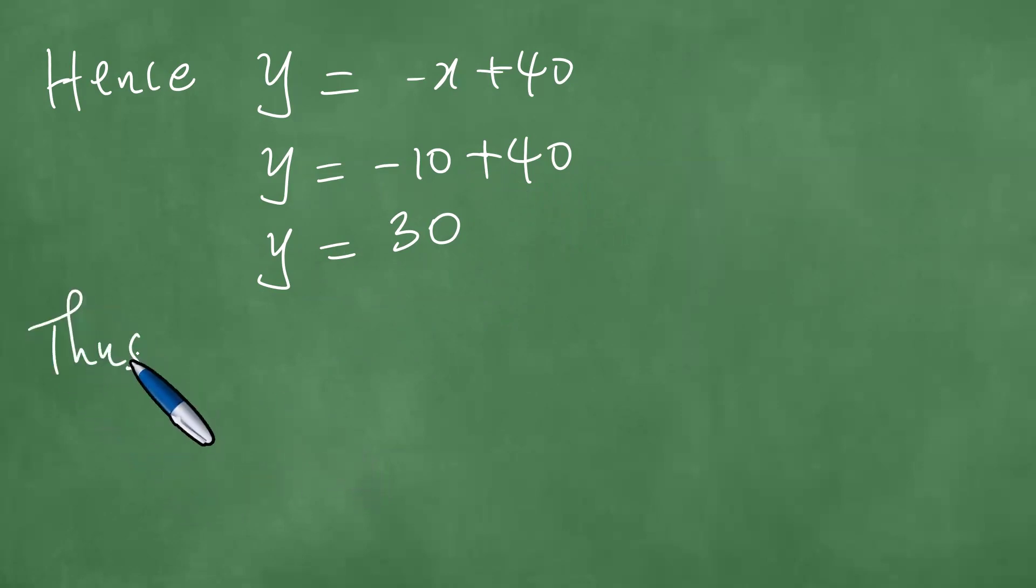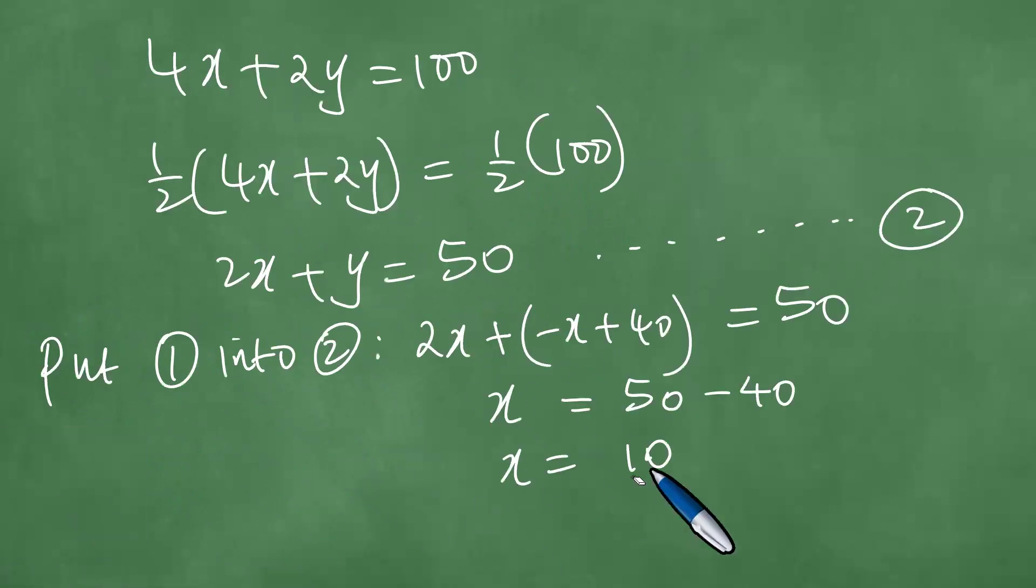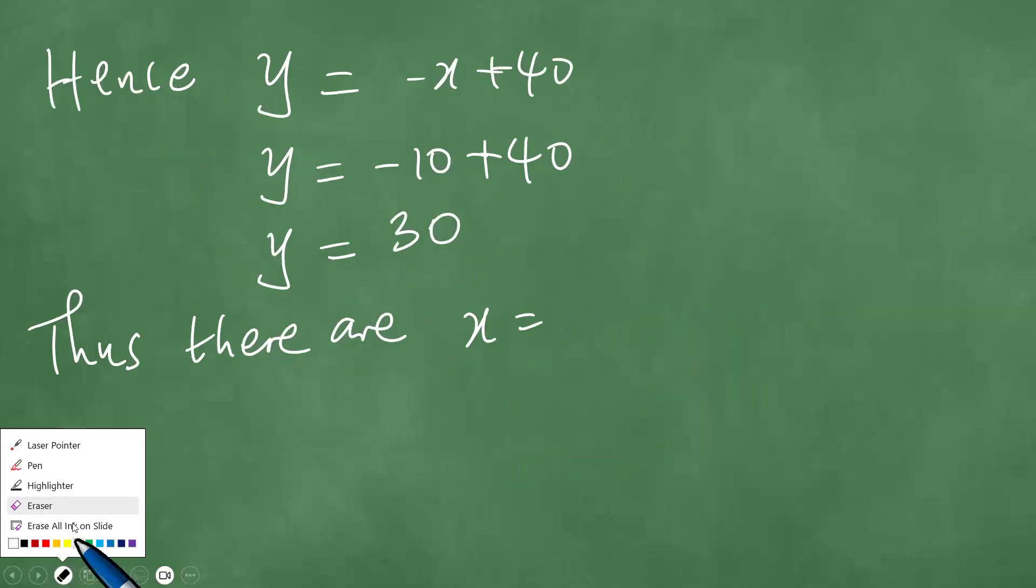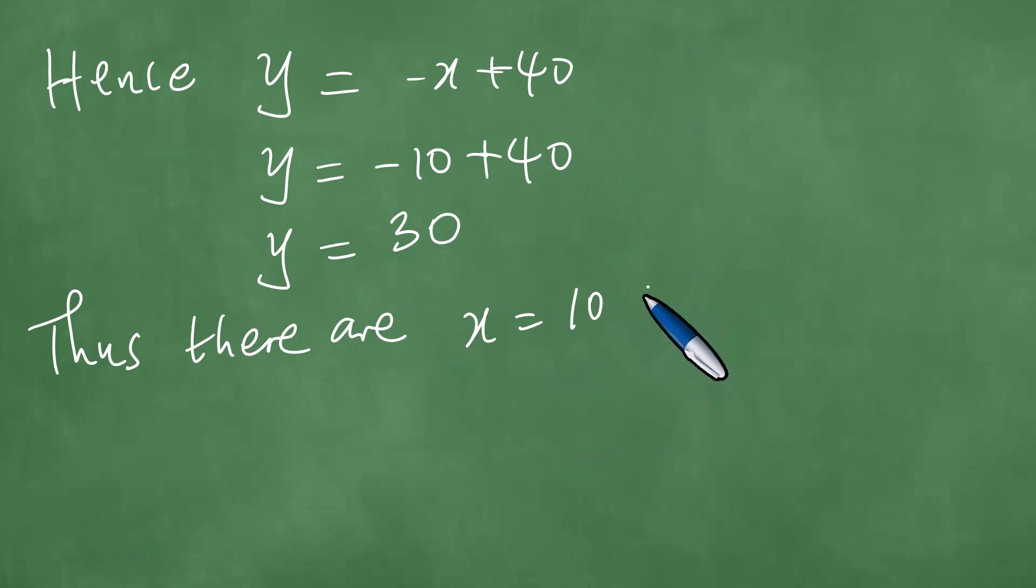And if this is the case, we continue to say thus: there are X equals 10. So X equals 10 pigs, because X represents the number of pigs. And Y equals 30 chickens.